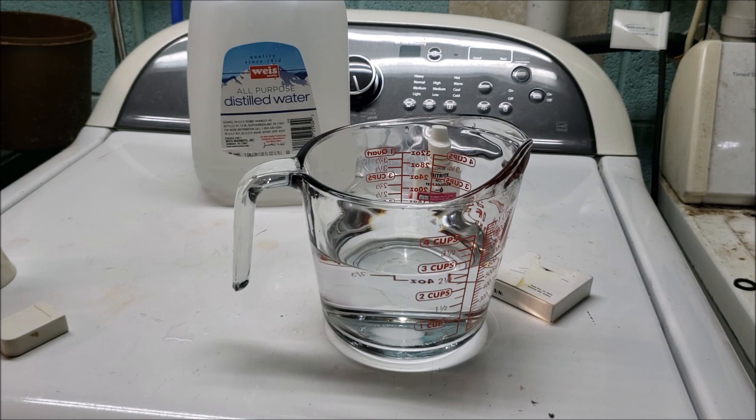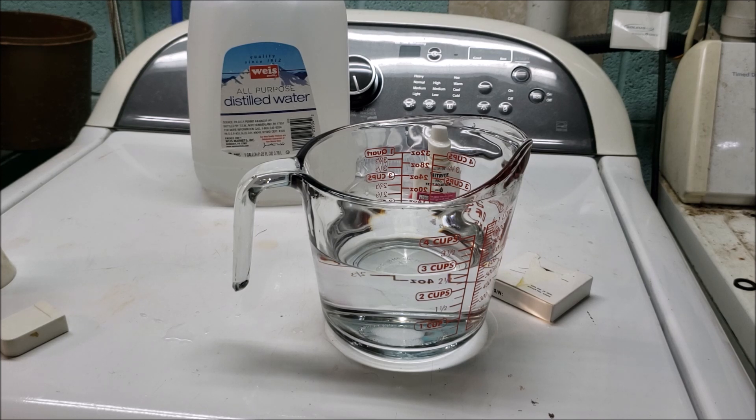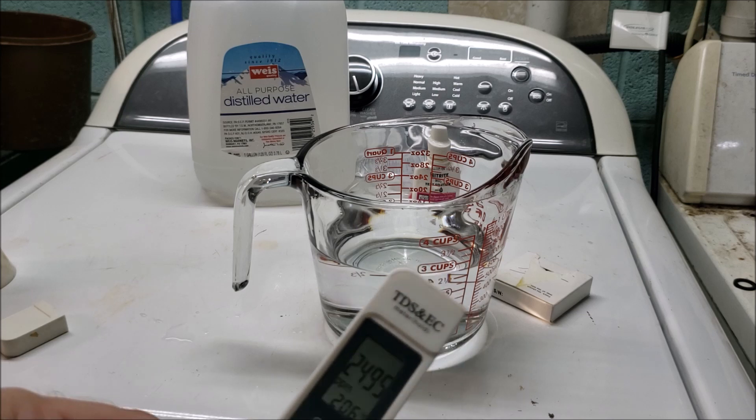So when you're looking at a TDS number and somebody's saying they've got this amount of TDS so their water is that hard—that's not necessarily true. TDS is an absolutely terrible way to measure water hardness. You measure the calcium and magnesium with a specific test for water hardness, not total dissolved solids.